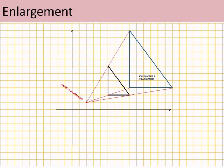So because I wanted it scale factor 2, that meant that every point had to be twice as far away from the centre of enlargement as it was in the original. And there's another example. It says scale factor half enlargement. So every point is half as far away from the centre of enlargement as the original shape was.